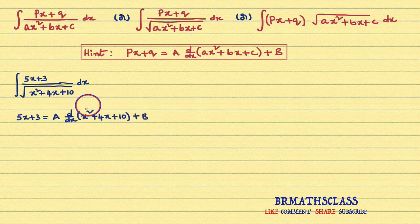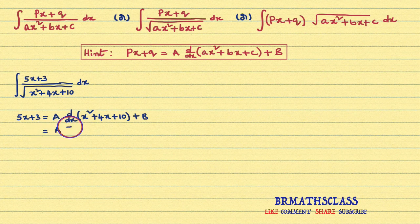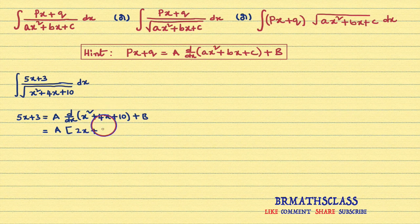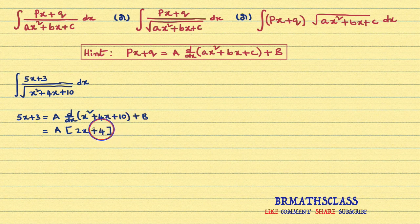Now, I will differentiate this expression and we will see what we get. A into derivative of x square is 2X, plus derivative of 4X is 4, plus derivative of the constant is 0. So, the derivative of x square plus 4X plus 10 is 2X plus 4, plus B.